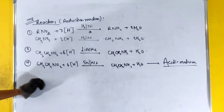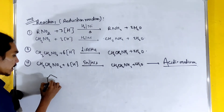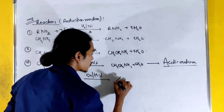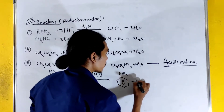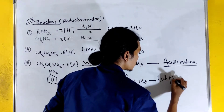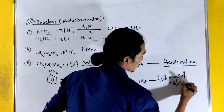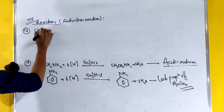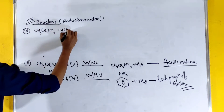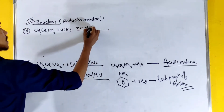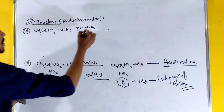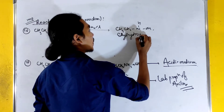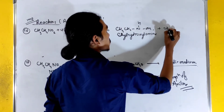The acidic medium reaction is also the lab preparation of aniline. C6H5NO2 plus 6H with Sn/HCl gives C6H5NH2. In neutral medium with Zn and NH4Cl: C6H5NO2 plus 4H with Zn/NH4Cl gives C6H5NHOH — phenyl hydroxylamine — plus 2H2O.